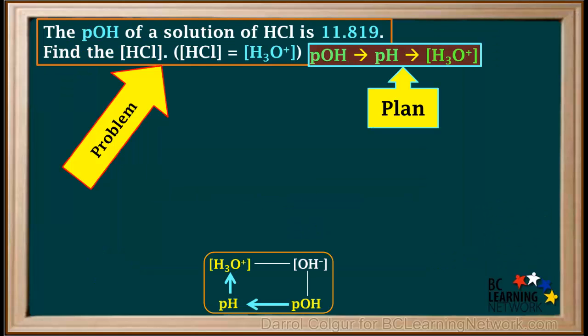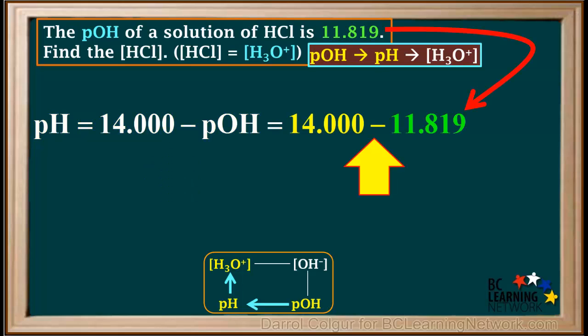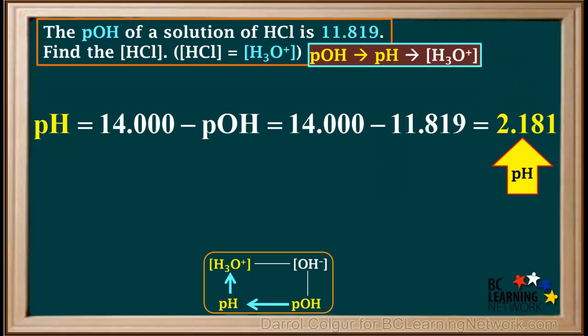Here's the problem again, along with the plan we came up with. We're given the pOH, so the first step is to convert pOH to pH. We use the formula pH = 14 - pOH, which is 14 - 11.819, which comes out to a pH of 2.181.